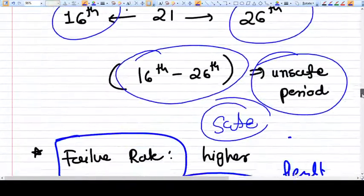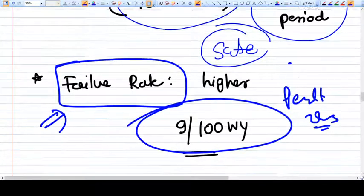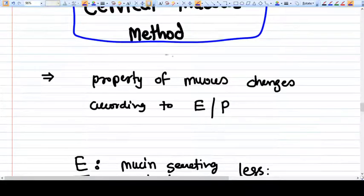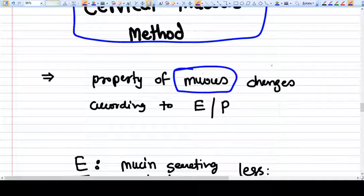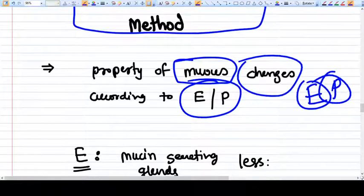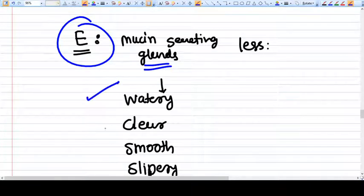Now comes the cervical mucus method. What is that? The basis behind that is the property of mucus changes according to what hormone is dominant at that time, that is either estrogen or progesterone. Under the influence of estrogen, the cervical glands have secretion of watery, clear, smooth, slippery discharge.